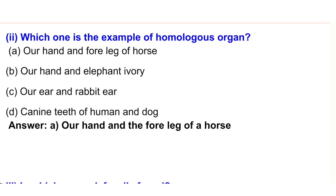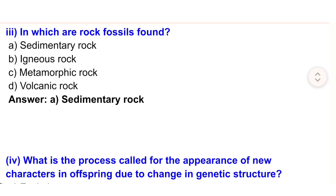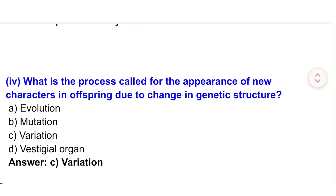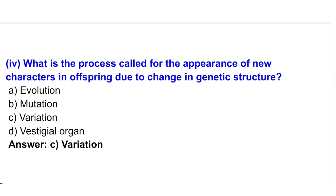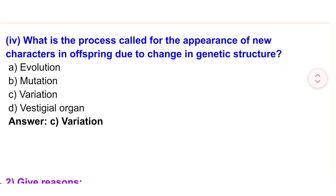In which type of rock are fossils found? A) Sedimentary rock, B) Igneous rock, C) Metamorphic rock, D) Volcanic rock. Answer: A) Sedimentary rock. What is the process called for the appearance of new characters in offspring due to change in genetic structure?